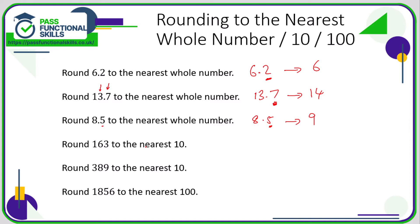When rounding to the nearest ten, here is our tens column, so we need to look at the value in the units column. For 163, the 3 is less than five, so that rounds down to 160. For 389, the units digit is 9, which is more than five, so we round up to 390. You can think of it as: 163 is between 160 and 170, closer to 160; and 389 is between 380 and 390, closer to 390.